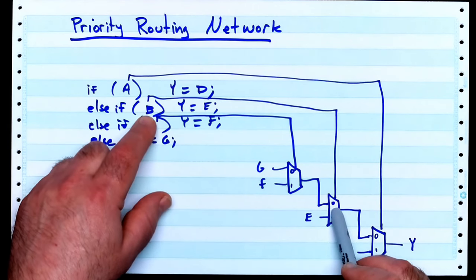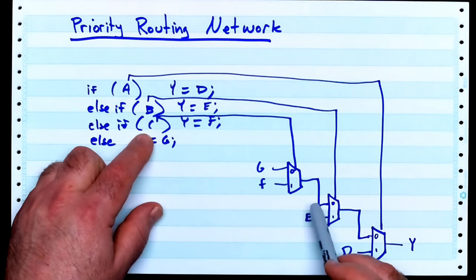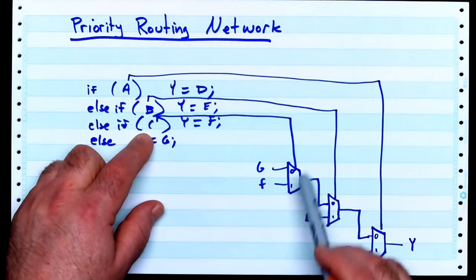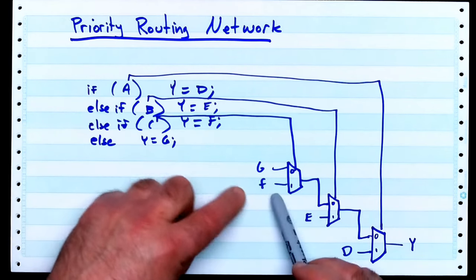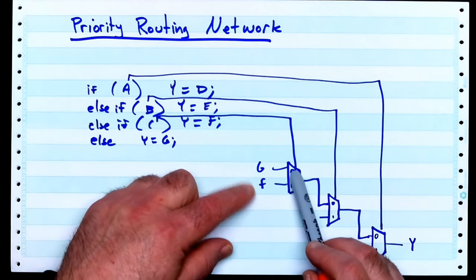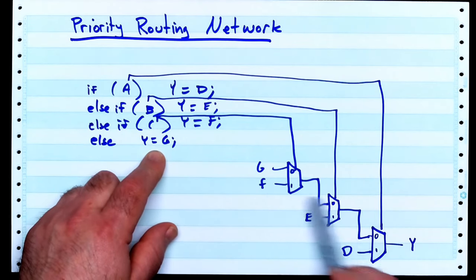So, if B is false, and A is false, we fall down to this else, and we ask, is C true or false? If C is true, we take F, and we propagate it over to Y, like so. If C is false, we fall down here, and we propagate G over to Y, like this.